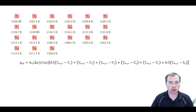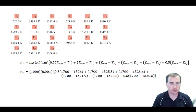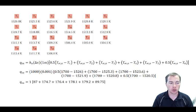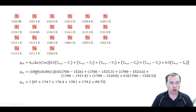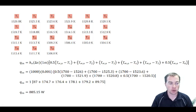We now substitute values for the temperatures: T1 = 1526, T2 = 1525.3, and so forth. Applying the arithmetic — with units of 1000 W/m²K × 0.001 m × 1 m giving W/K, multiplied by temperature differences — our result is that the heat transfer in is 885.15 watts.